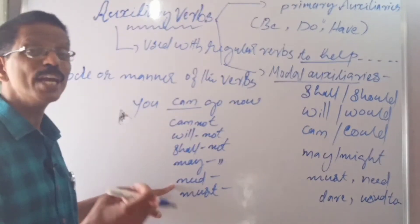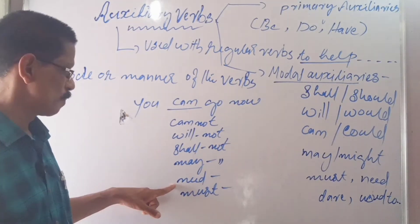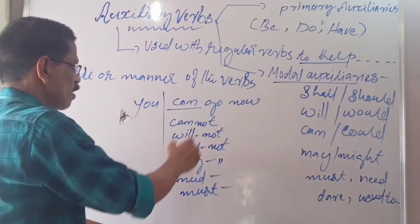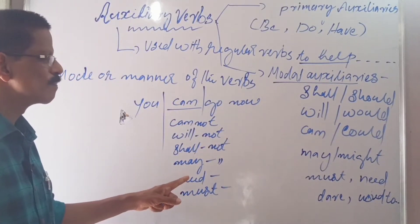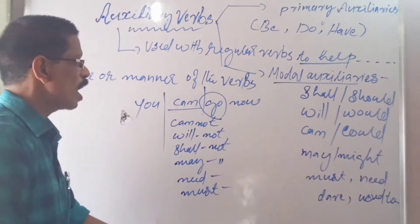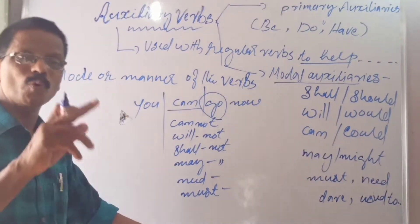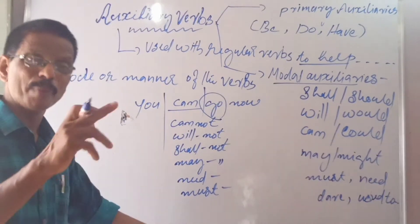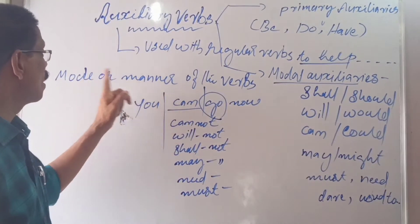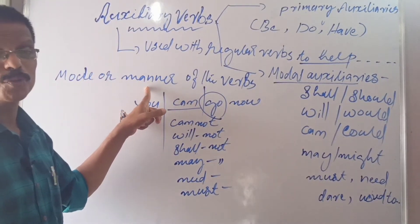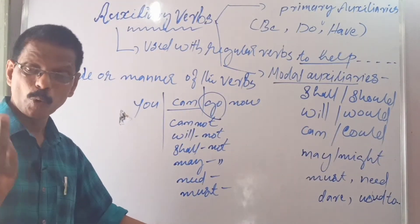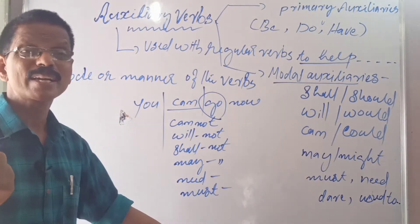'You need to go,' 'You need not go,' 'You must go now' — these auxiliaries express the mode or manner of the verbs that follow them. In what way should you go? Is it 'you shall go,' 'you must go,' 'you need not go,' 'you may go,' 'you may not go'? They express ideas like possibility, permission, polite request, etc.